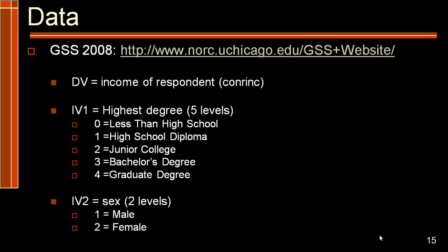My first independent variable is the highest degree that somebody's earned. There are five different levels of this variable: less than high school, high school, junior college, bachelor's degree, and some type of graduate degree.